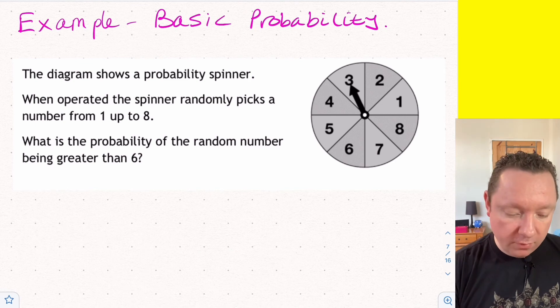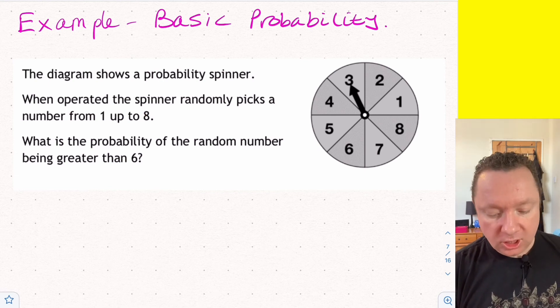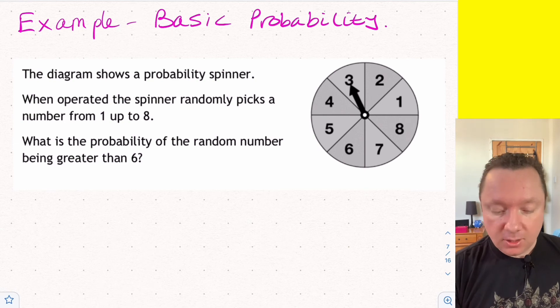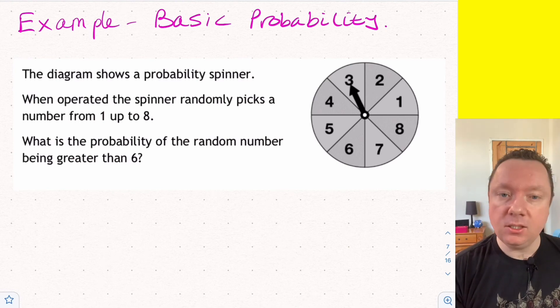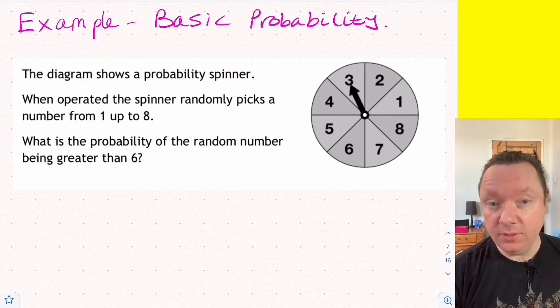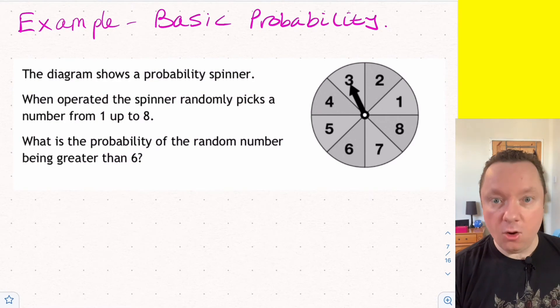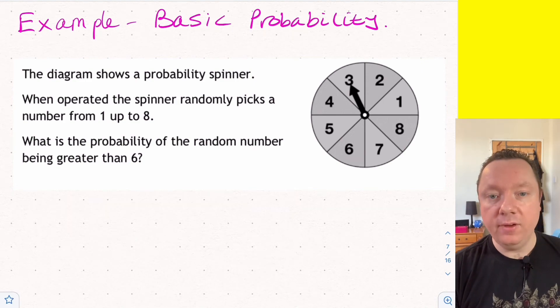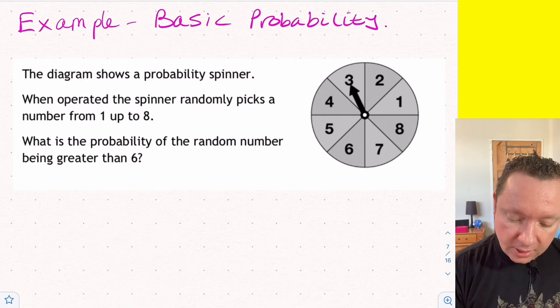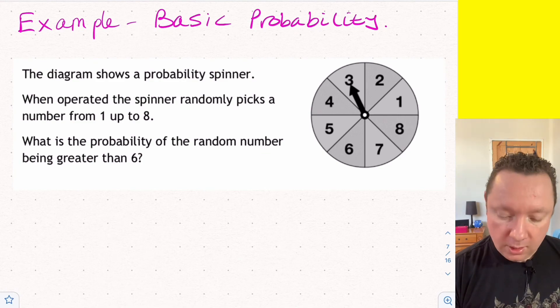Okay, some basic probability just to finish off. The diagram shows a probability spinner. When operated, the spinner randomly picks a number from 1 up to 8. What's the probability that we get a random number greater than 6? So probability works very simply. It's just a fraction. I'm looking for how many things are bigger than 6. Well, I've got 6 isn't bigger than 6. 7 is, so that's 1. 8 is, that's 2. So the probability is just 2 out of how many things it could possibly happen, where it could land on any number, 1 to 8. There's 8 of them. So there's the probability, 2 out of 8. Simple. And then just simplify that fraction to 1 quarter. I've just divided the top by 2 to get 1. 8 divided by 2 is 4. And there's my final answer.